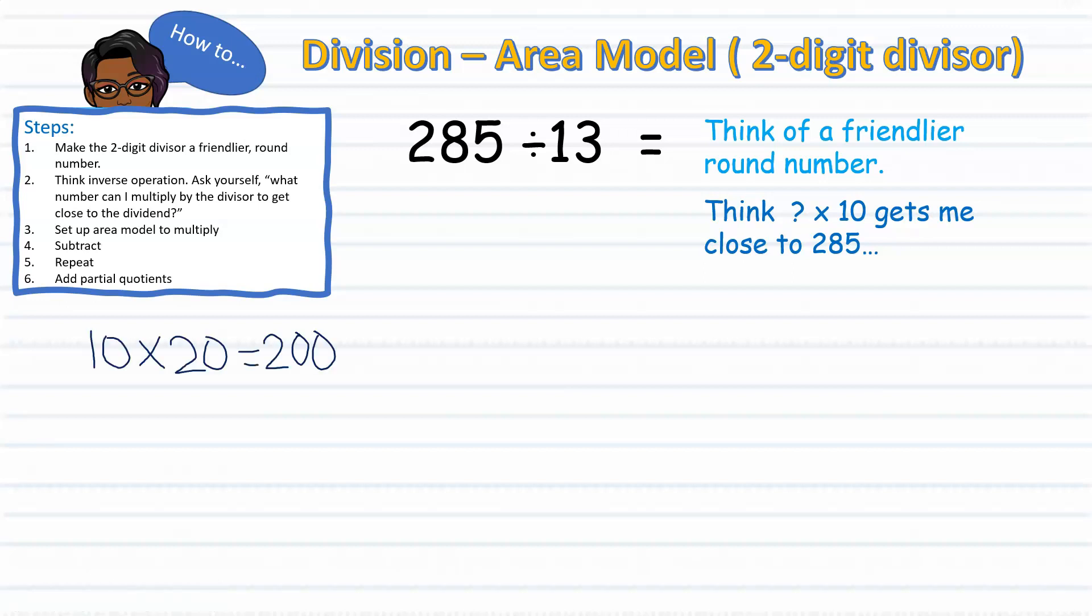Since I know that 10 times 20 equals 200, I can then multiply 13 times 20. Keeping in mind that I rounded 13 to 10 so that I can do some math computation in my head, to think of other factors when multiplied by it will get me close to 285.